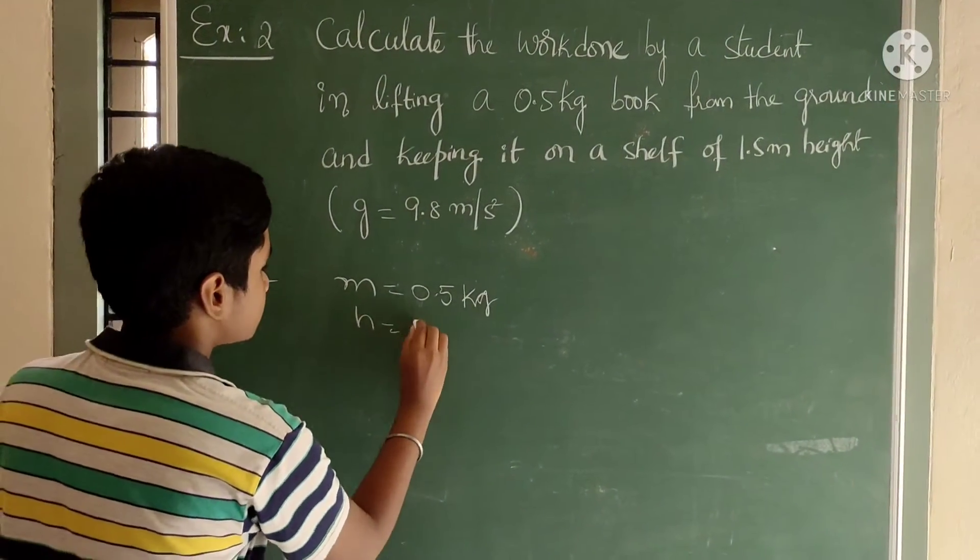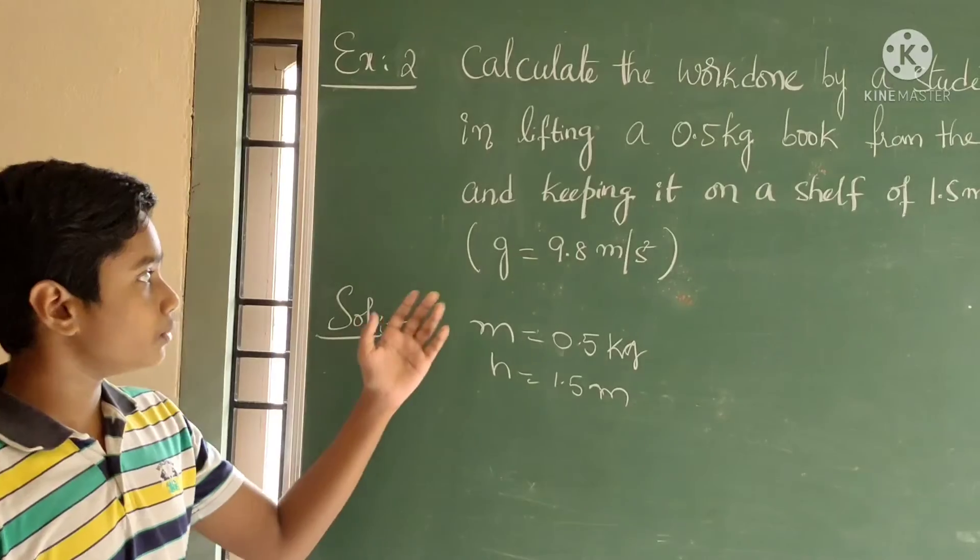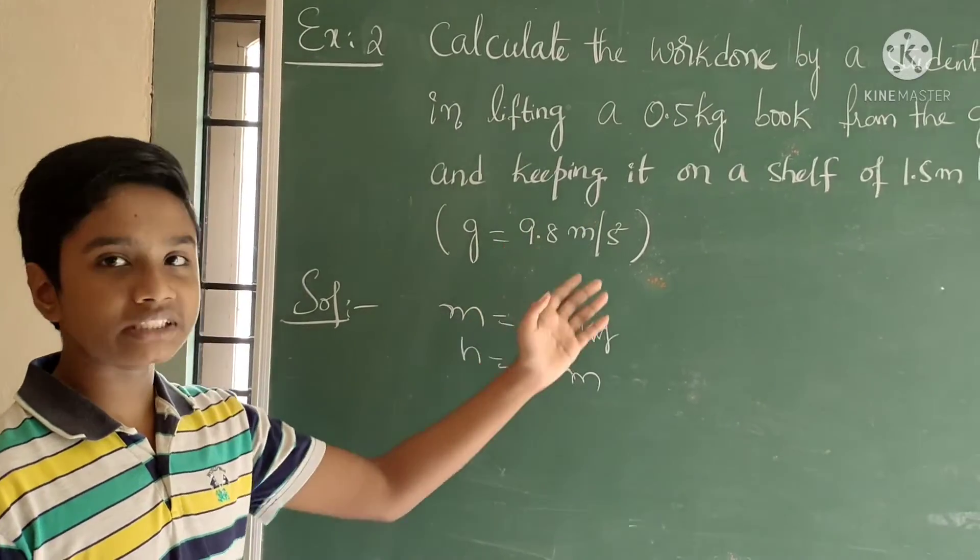Taking height H is equal to 1.5 meters, and take acceleration due to gravity G is equal to 9.8 meter per second square.